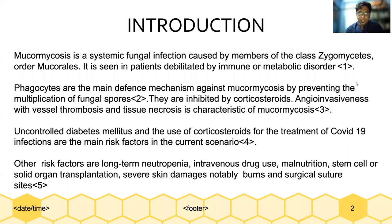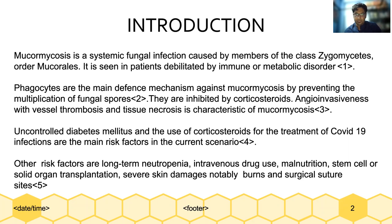As we all know, mucormycosis is a systemic fungal infection caused by a member of the class Zygomycetes of order Mucorales. It is seen in patients debilitated by immune or metabolic disorders. Phagocytes are the main defense mechanism against mucormycosis, and they do so by preventing the multiplication of fungal spores. This process is inhibited by corticosteroids. Angioinvasiveness with vessel thrombosis and tissue necrosis is a characteristic feature of mucormycosis. Uncontrolled diabetes and the use of corticosteroids for the treatment of COVID-19 are the main risk factors in the current scenario.